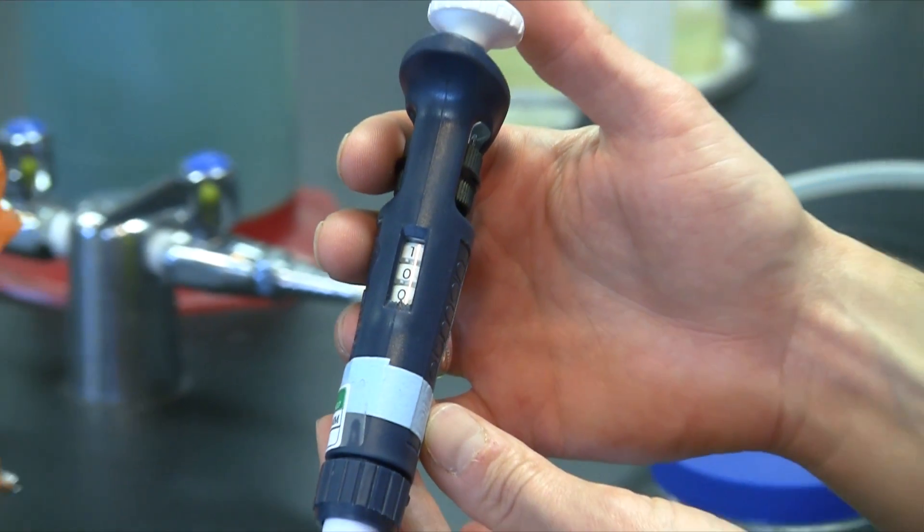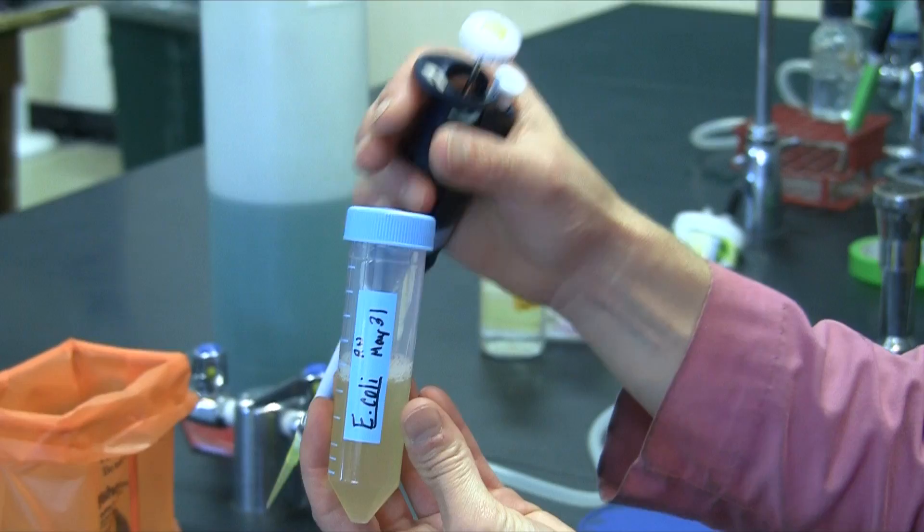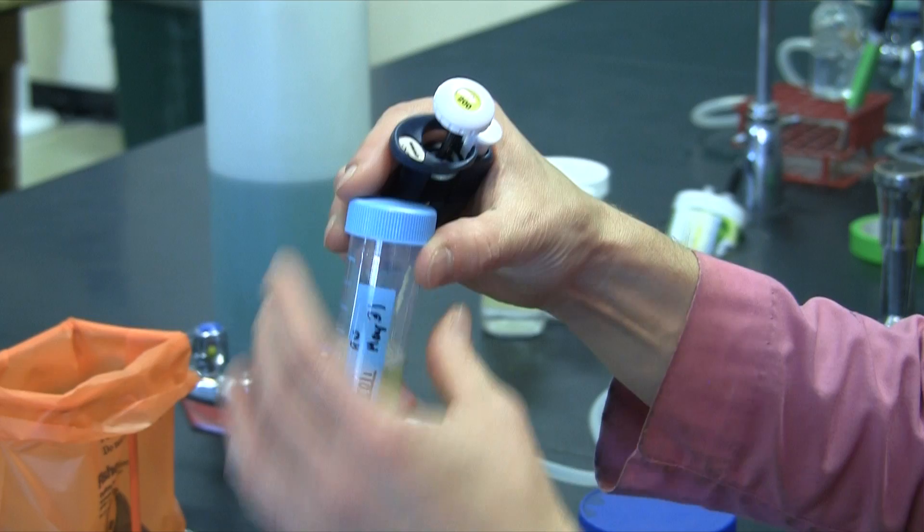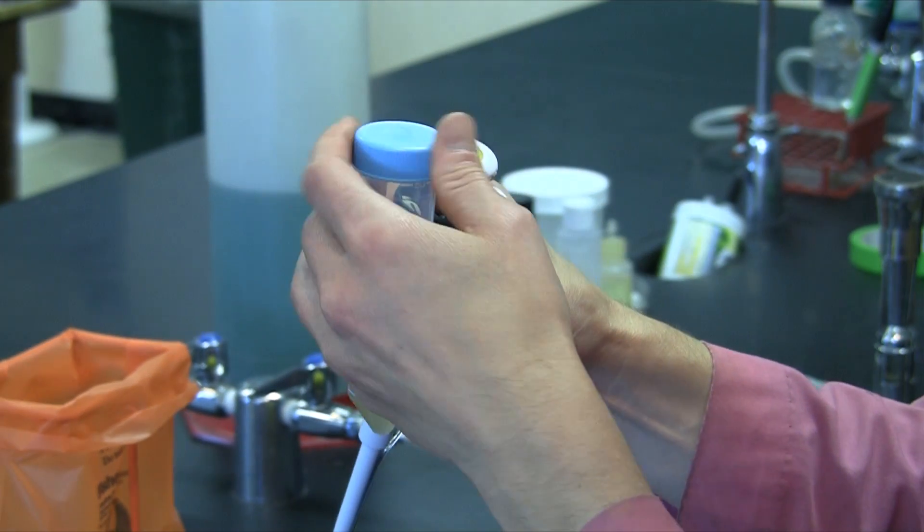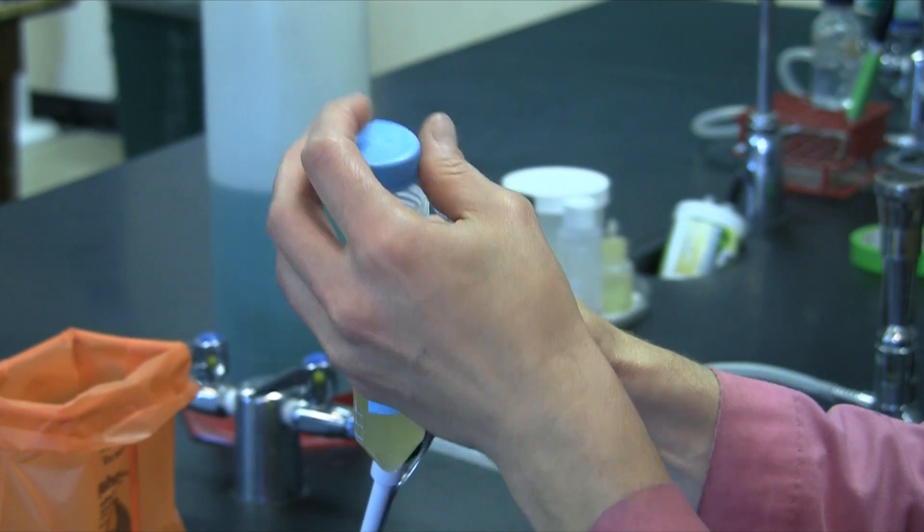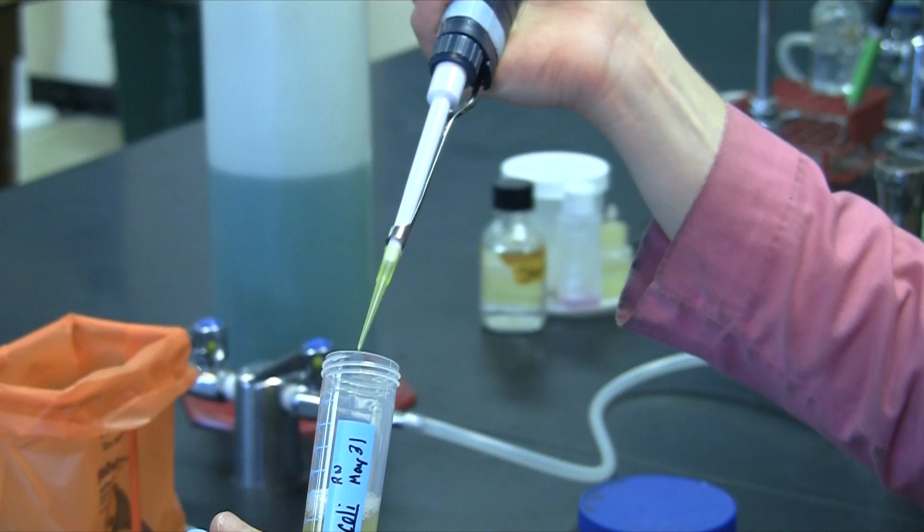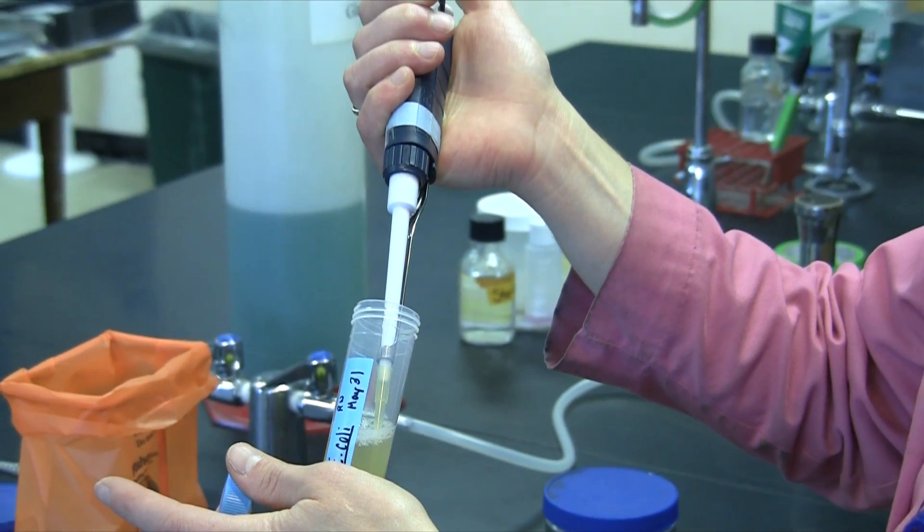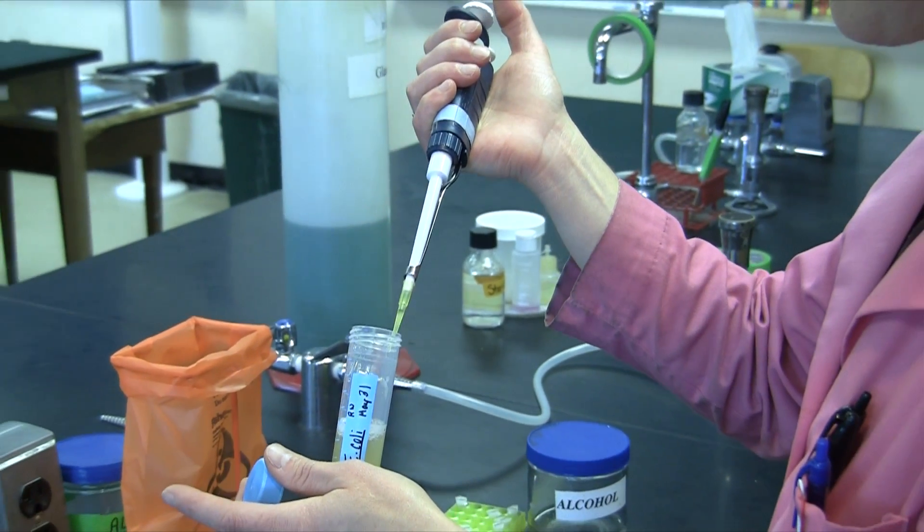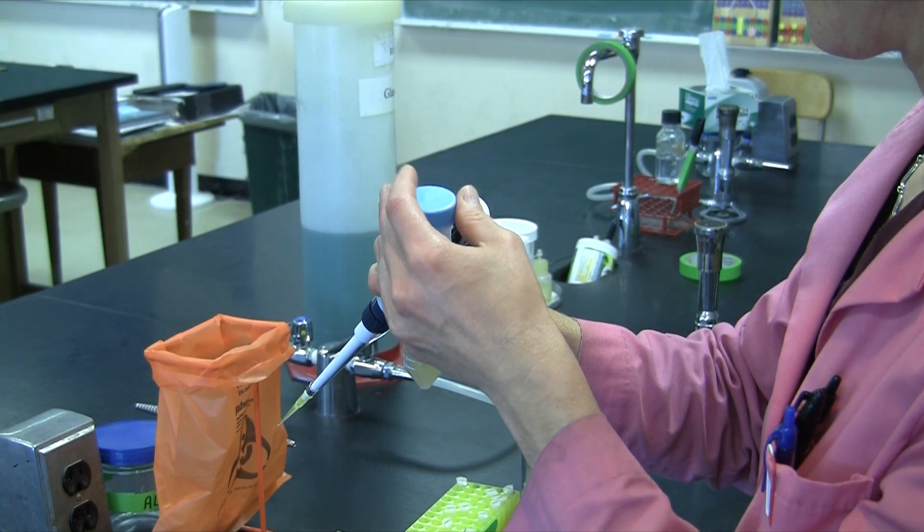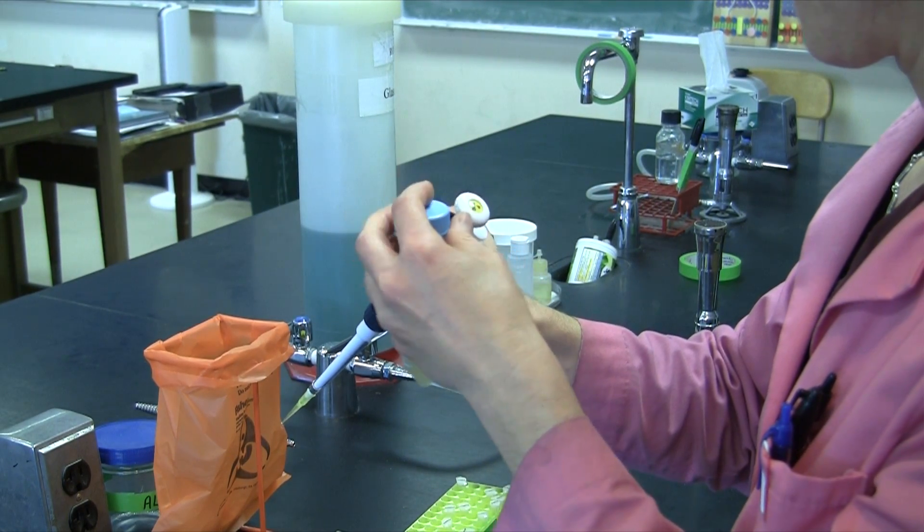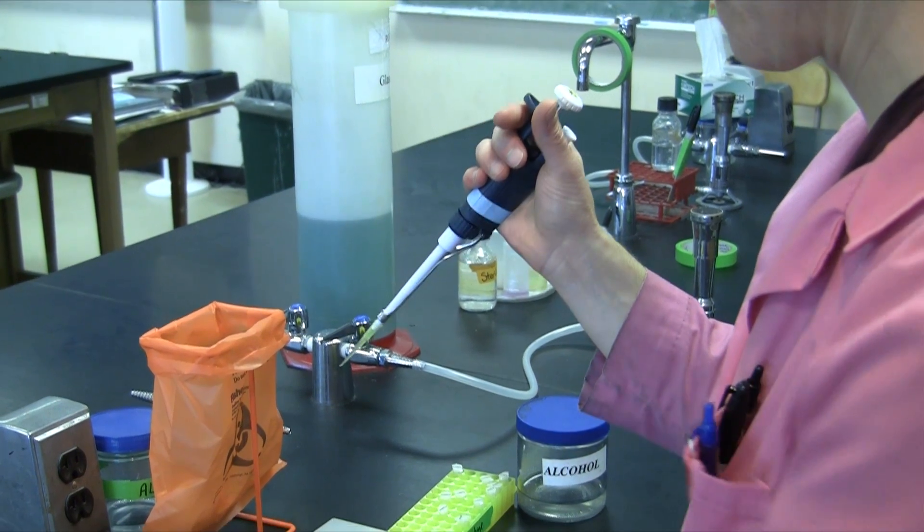We'll begin by putting 100 microliters, which is 0.1 milliliters, of E. coli onto your TSA plate. Remember that you can use your P200 to do this, set to 100. This is the conversion that you need to remember: 0.1 milliliters equals 100 microliters.